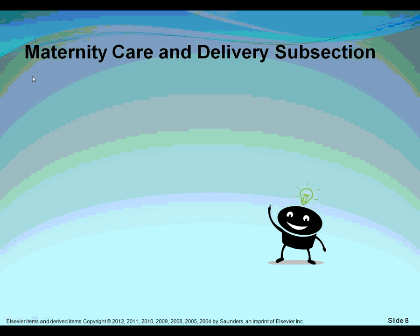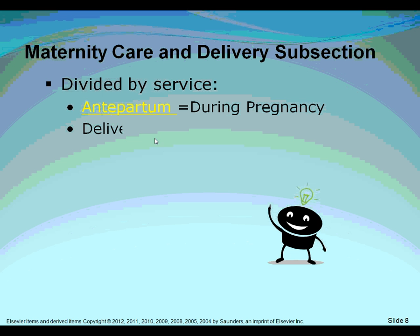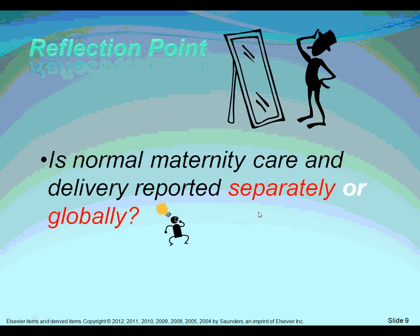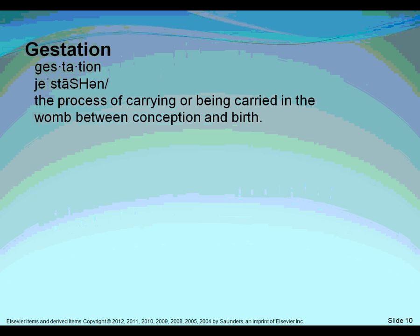Moving to the maternity care and delivery subsection, it is divided by types of services: antepartum, which is during pregnancy; delivery; postpartum, which is after giving birth; and abortion care. A reflection point asks: is normal maternity care and delivery reported separately or globally? The answer is globally, because it is an all-inclusive rate — one code for all services.